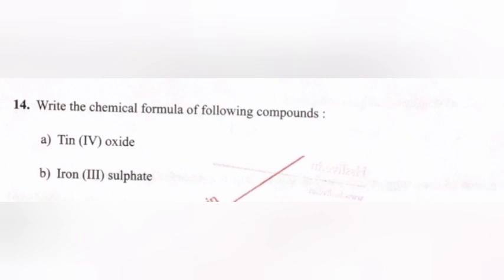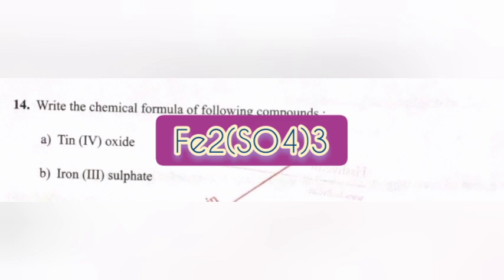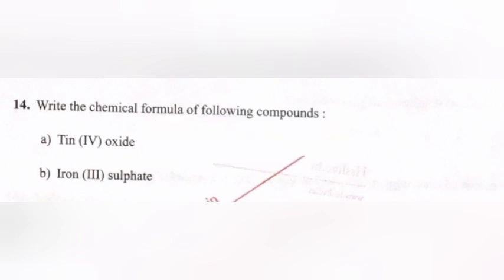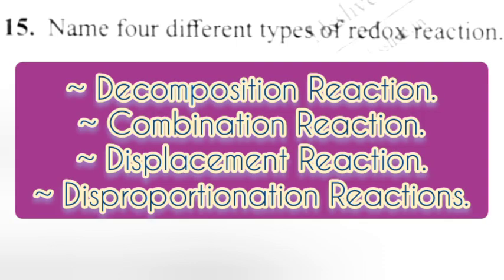Question 14: Write the chemical formula of the following compounds: (a) Tin(IV) oxide — SnO2; (b) Iron(III) sulfate — Fe2(SO4)3. Question 15: Name four different types of redox reactions. Answer: decomposition reaction, combination reaction, displacement reaction, and disproportionation reaction.